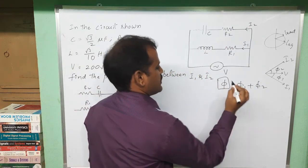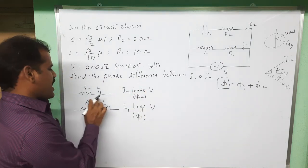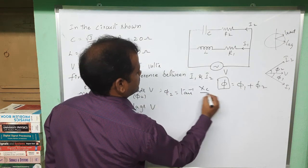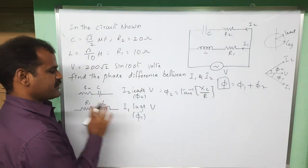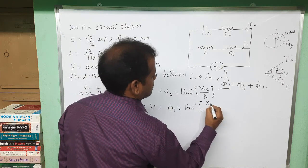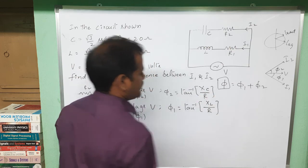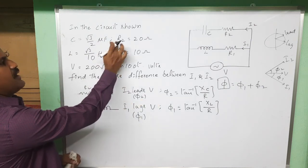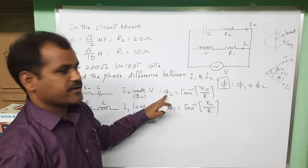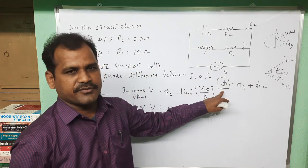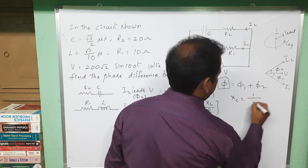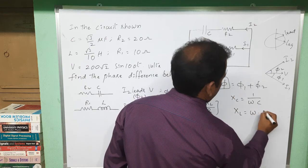In the RC circuit, i2 leads V by phi2, where phi2 equals tan inverse of (XC divided by R). In the RL circuit, current lags voltage by phi1, where phi1 equals tan inverse of (XL divided by R). Since the RC and RL component values are given, we first need to find XL and XC, then compute phi1 and phi2, and finally add both values to get the required phase difference.